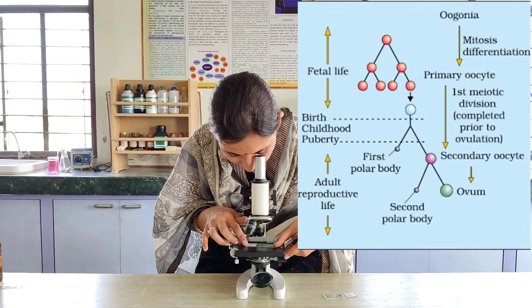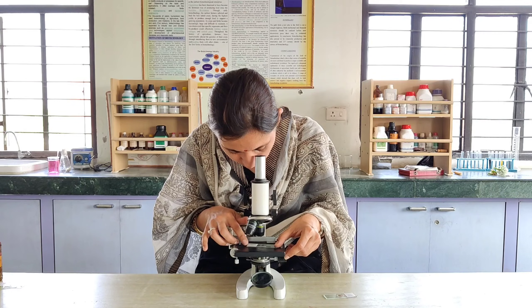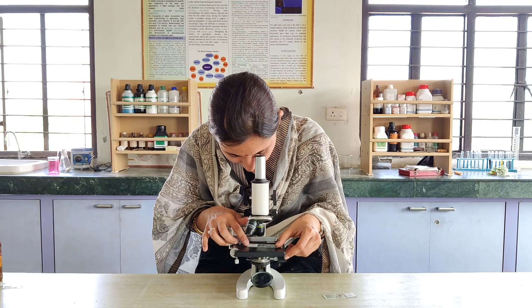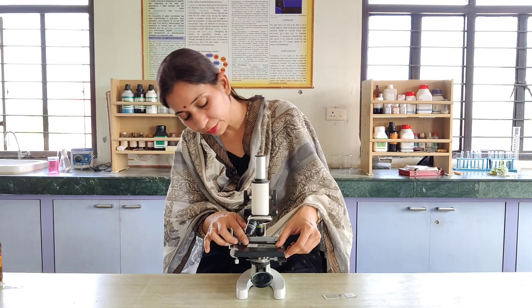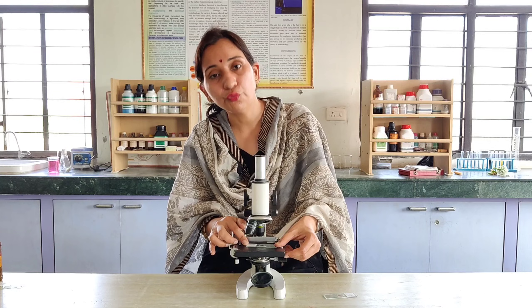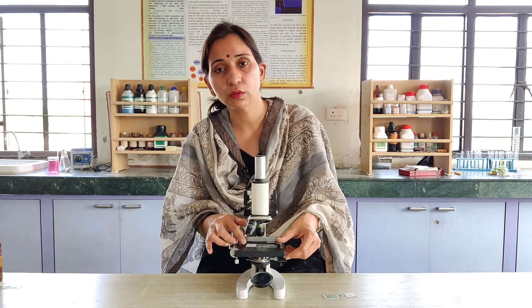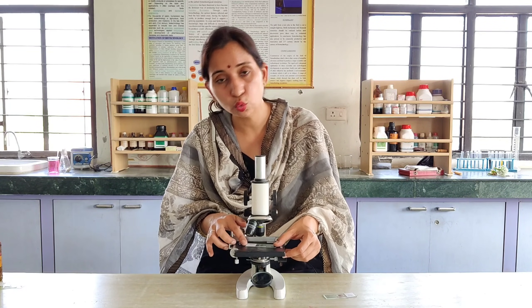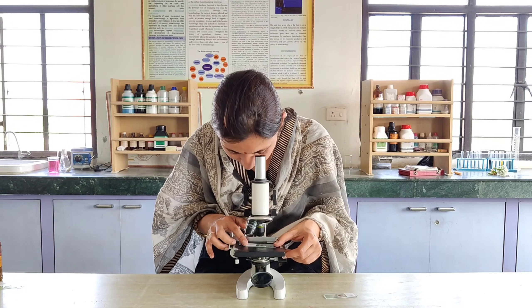This ovary has two parts: the outer part is the cortex and the inner part is the medulla or matrix region, in which the follicles are formed. You can easily see that the oogenesis process is happening in this slide.